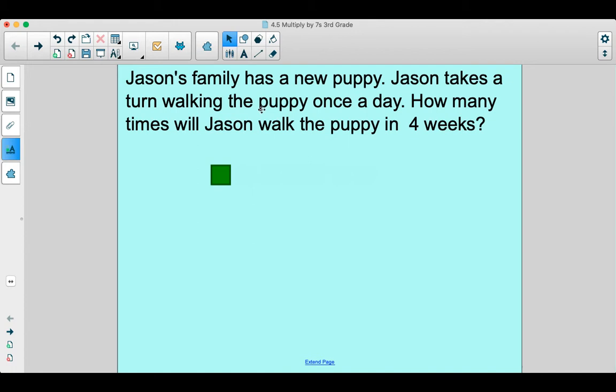Jason's family has a new puppy. Jason takes a turn walking the puppy once a day. How many times will Jason walk the puppy in four weeks? So what do we know for sure in this story? We know for sure that he's walking the puppy once a day, and we know the question is asking us about how many times Jason will walk the puppy in four weeks. So we have to figure that out.